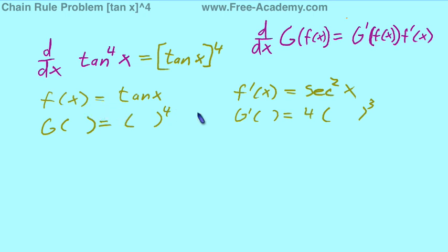Now that we have our f of x, f prime of x, and g prime parentheses, we have everything we need to put into our formula here. So, starting off with the g prime, we have 4 parentheses raised to the 3rd power.